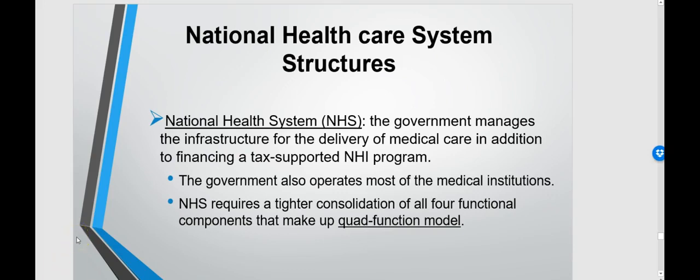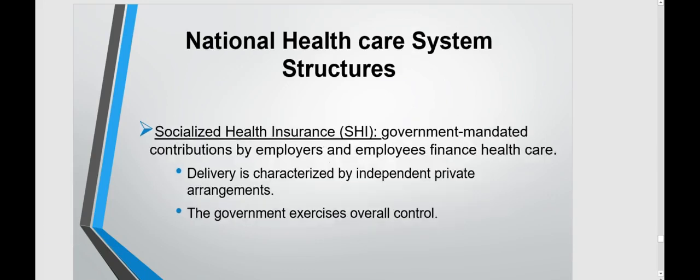The National Health System — NHS — is used in Great Britain. The government manages the infrastructure for the delivery of medical care in addition to financing a tax-supported program. The government operates most of the medical institutions, and the NHS requires a tighter consolidation of all four functional components: financing, insurance, delivery, and payment — the quad-functional model.